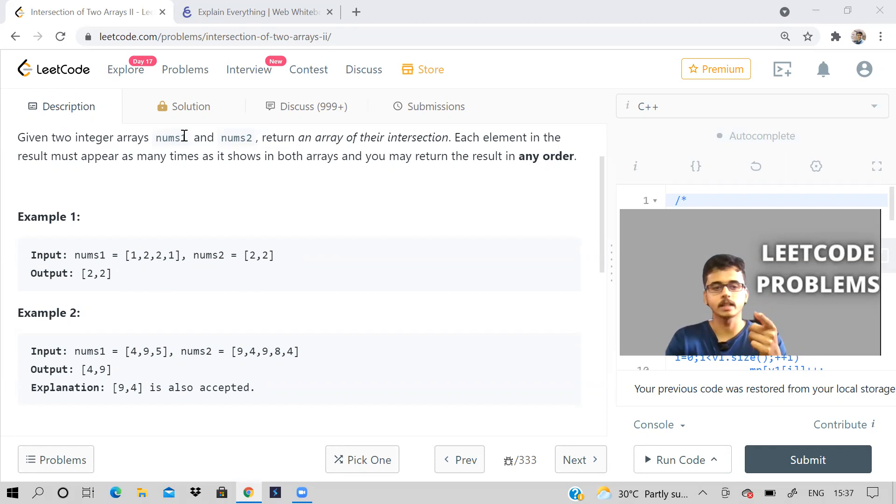Given two integer arrays, num1, num2, return an array of their intersection. Each element in the array must appear as many times as it shows in both arrays and we can print the result in any order.